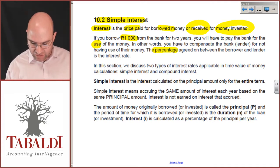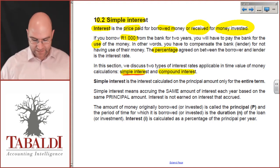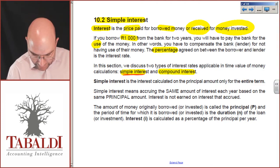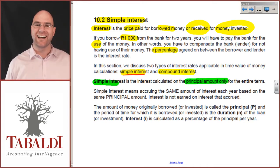This will have a fixed percentage and also how often it needs to be paid. Here in this section, we are going to discuss two types of interest rates, simple interest and compound. For this video, we are purely doing simple interest. Understand that simple interest is the interest calculated on the principal amount only for the entire term. There is no compounding.